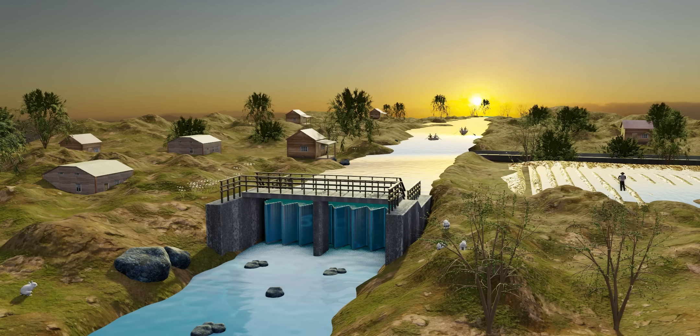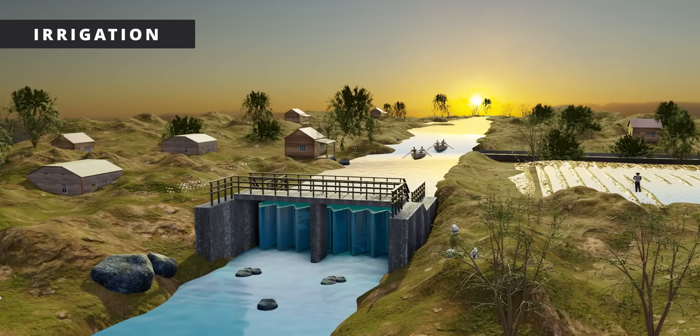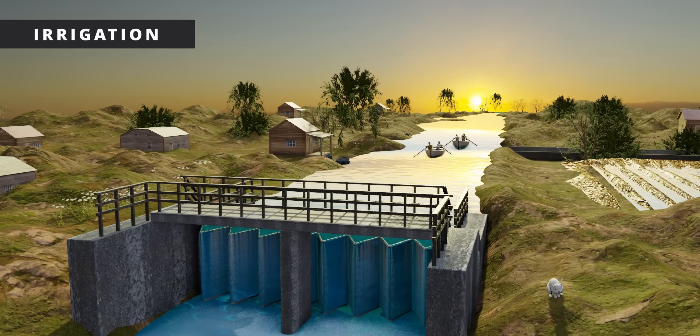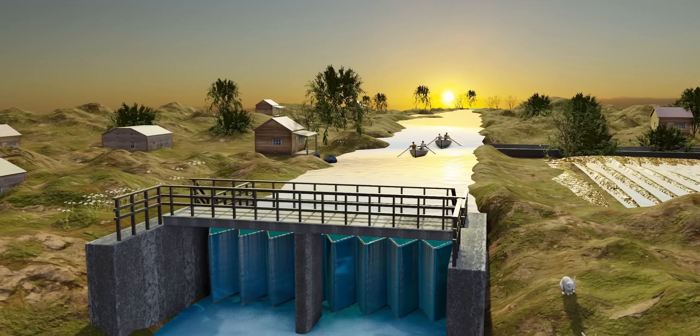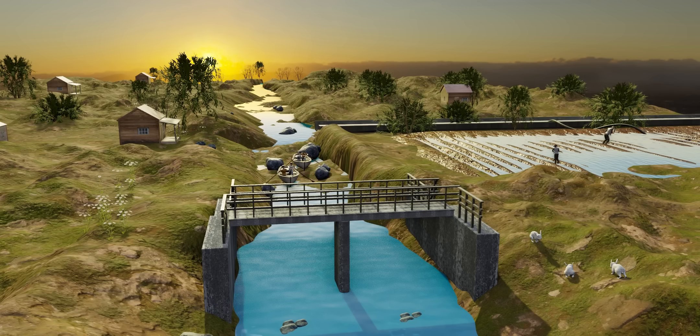The most important application of the weir is irrigation and recreational activities. For example, take a look at Kennet River. People are enjoying a boat ride. You can even see irrigation channels they have constructed. However, before installing the weir, this was the condition of the Kennet River.